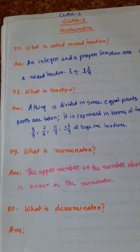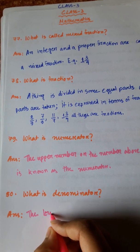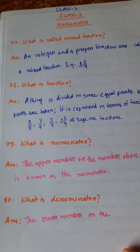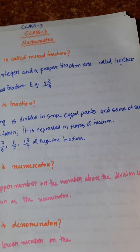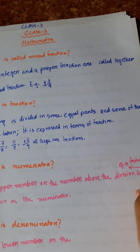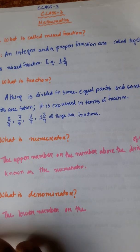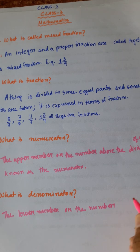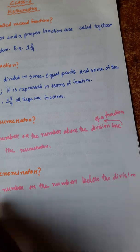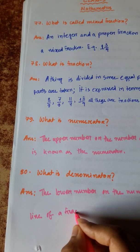Number 80: What is a denominator? The lower number is the denominator. The lower number, or the number below the division line of a fraction, is called the denominator.